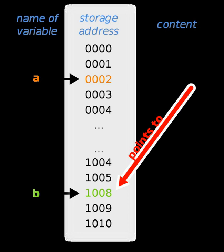The Eiffel object-oriented language employs value and reference semantics without pointer arithmetic. Nevertheless, pointer classes are provided. They offer pointer arithmetic, typecasting, explicit memory management, interfacing with non-Eiffel software, and other features.